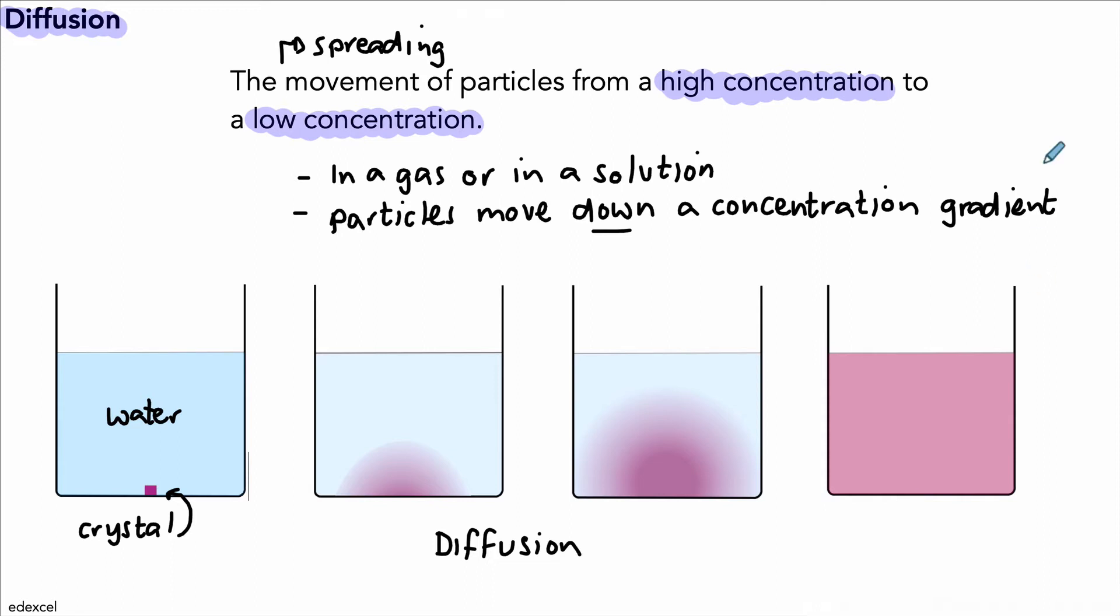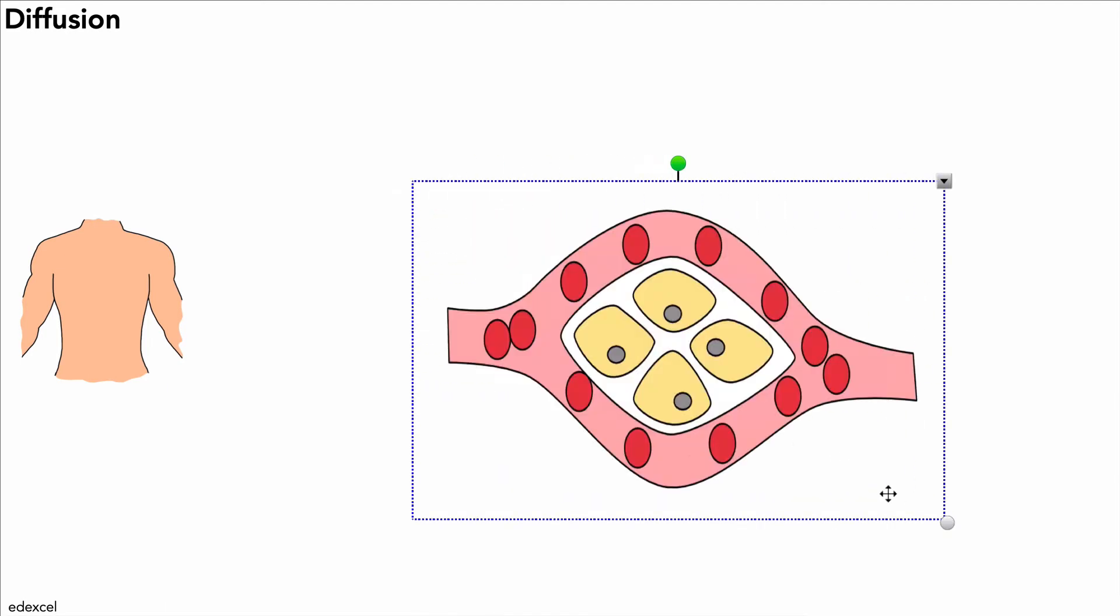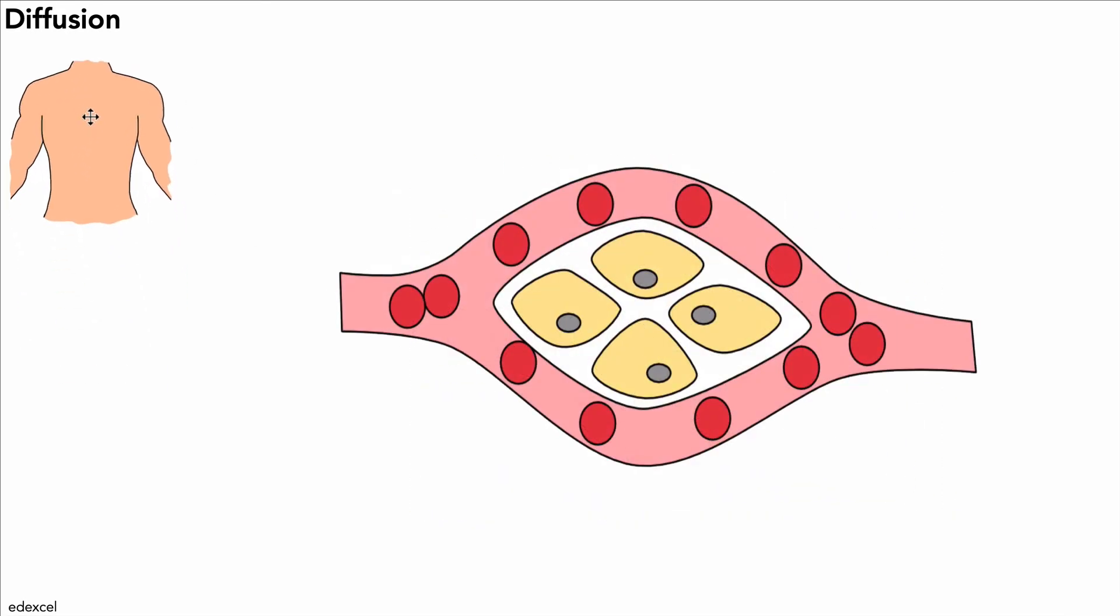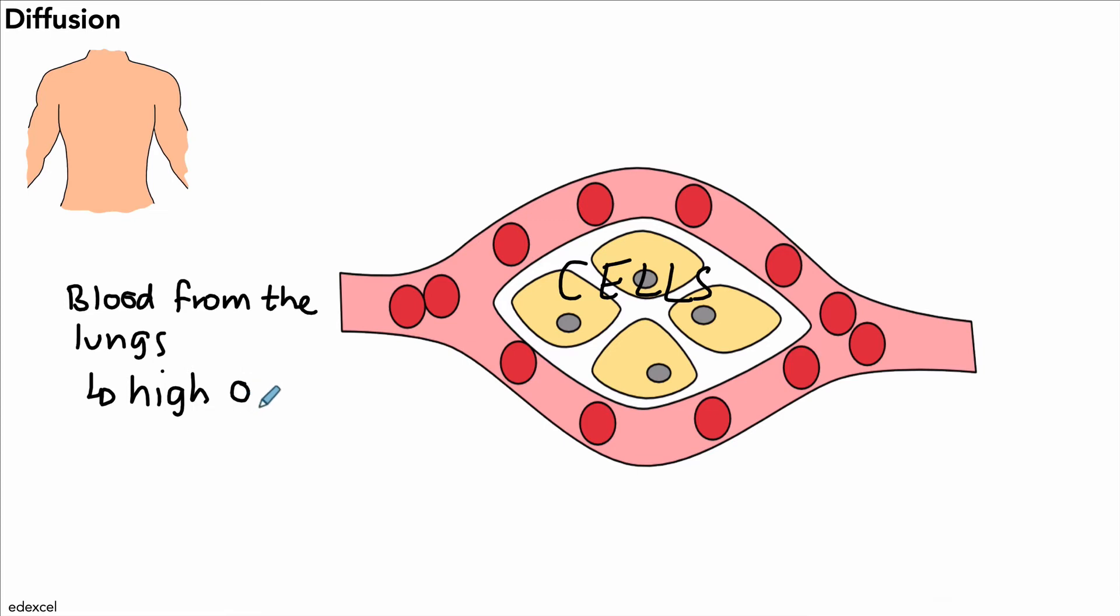We can look at this in an example in living things. If we take this diagram of some capillaries supplying cells, the blood going to the cells comes from the lungs via the heart. Because blood comes from the lungs via the heart, it's going to have a high oxygen concentration and a low carbon dioxide concentration.